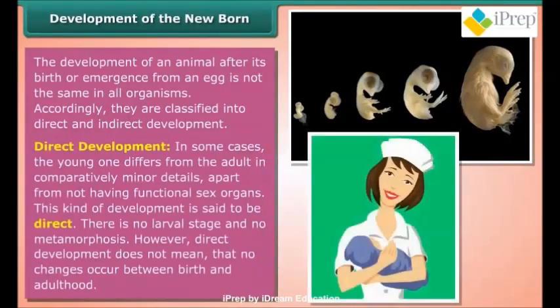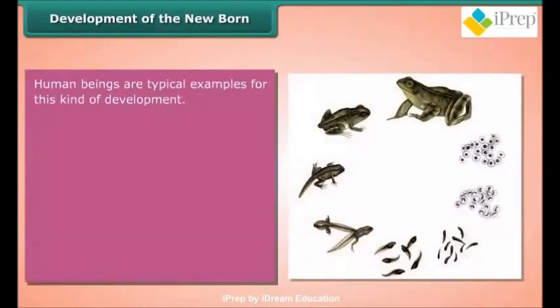Direct development: In some cases, the young one differs from the adult in comparatively minor details, apart from not having functional sex organs. This kind of development is said to be direct — there is no larval stage and no metamorphosis. However, direct development does not mean that no changes occur between birth and adulthood. Human beings are typical examples of this kind of development.